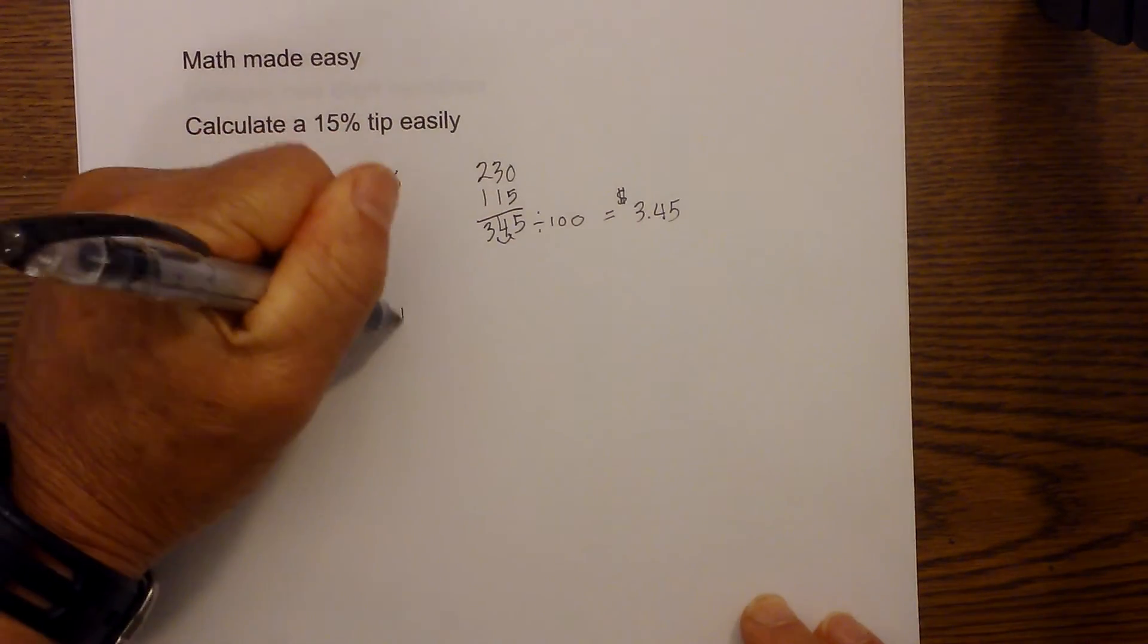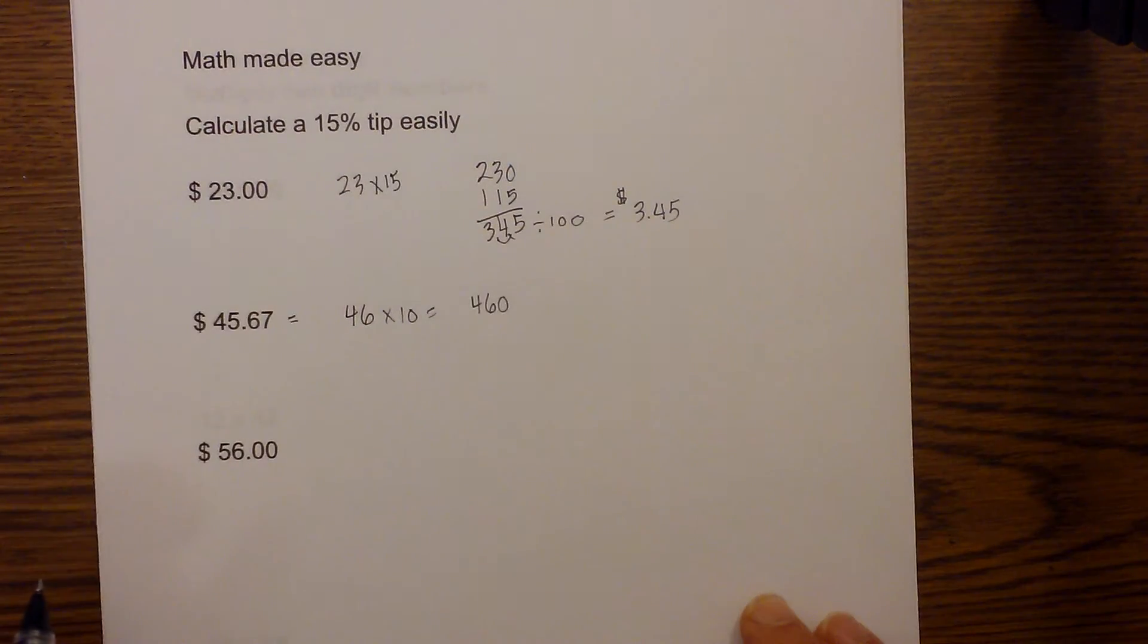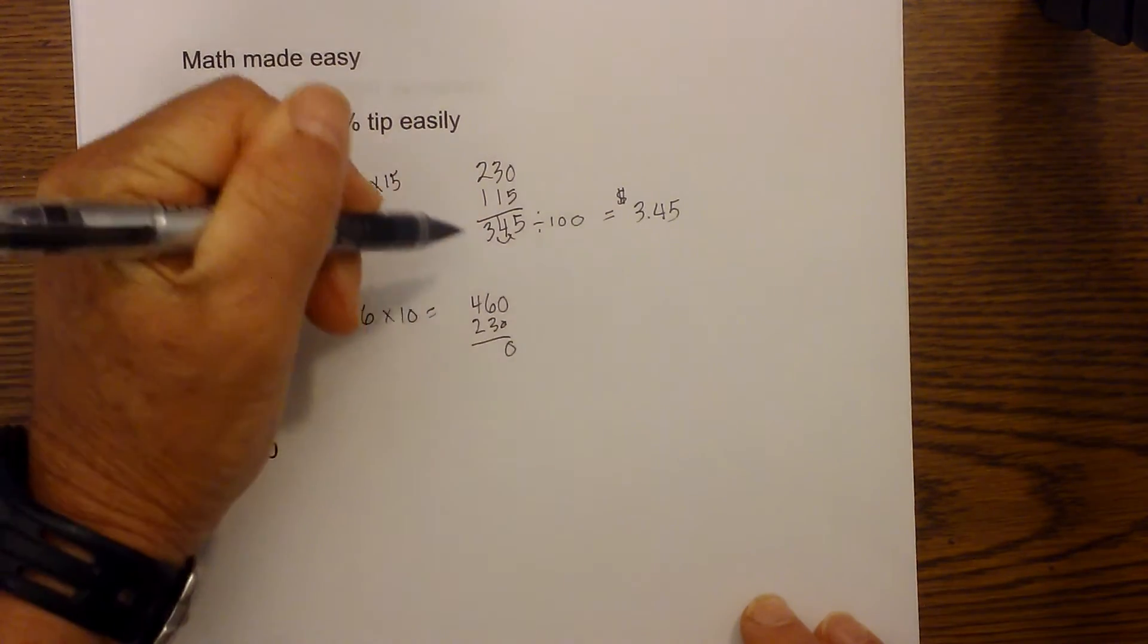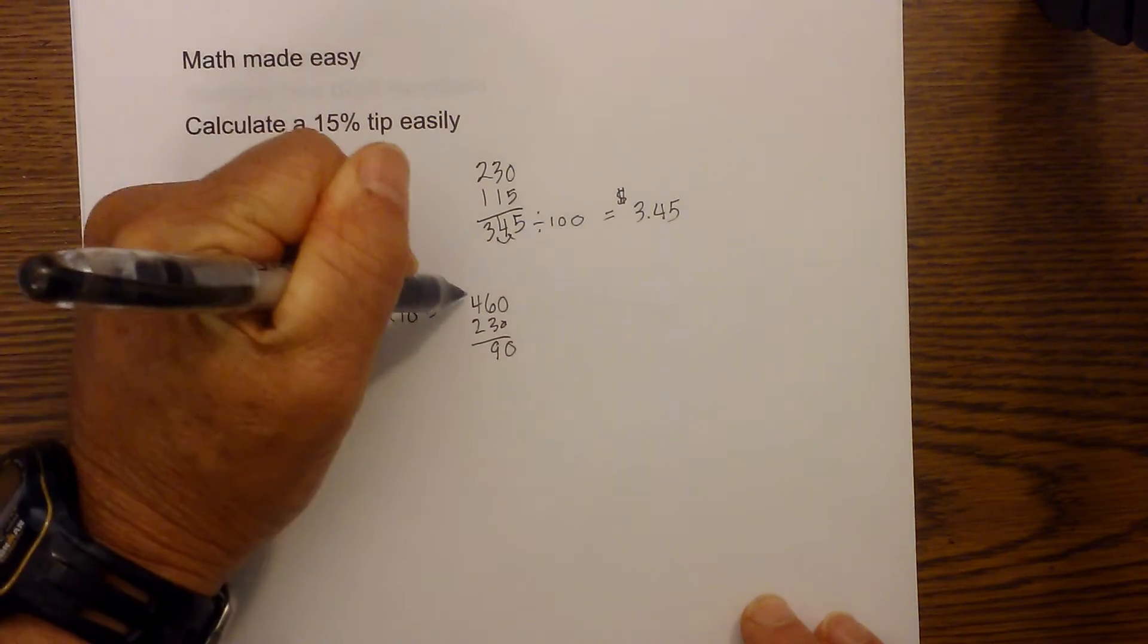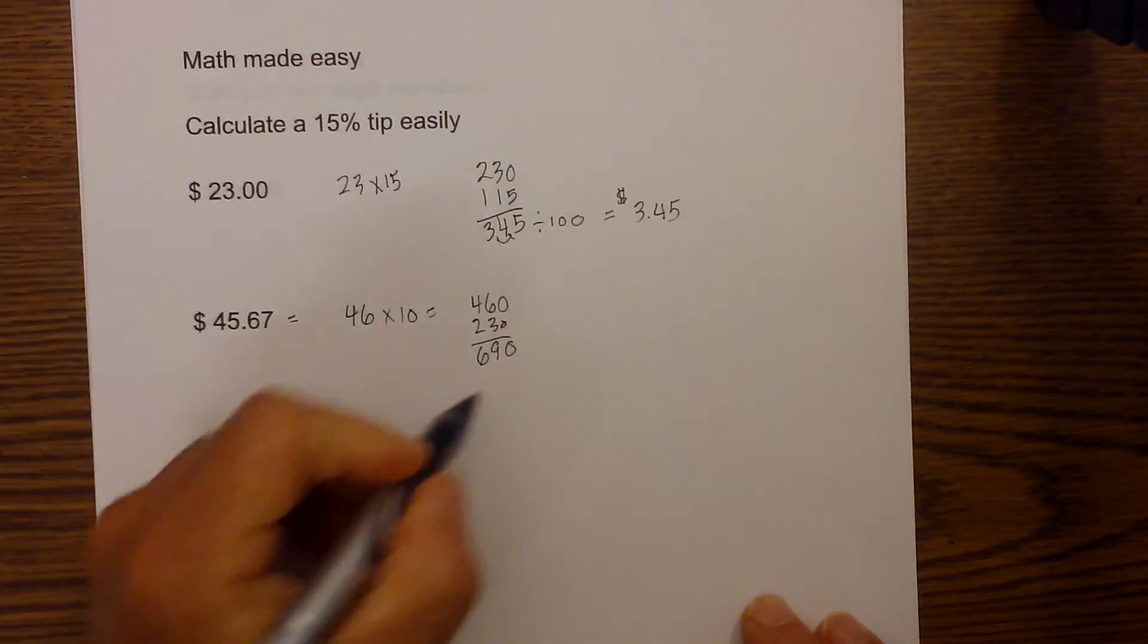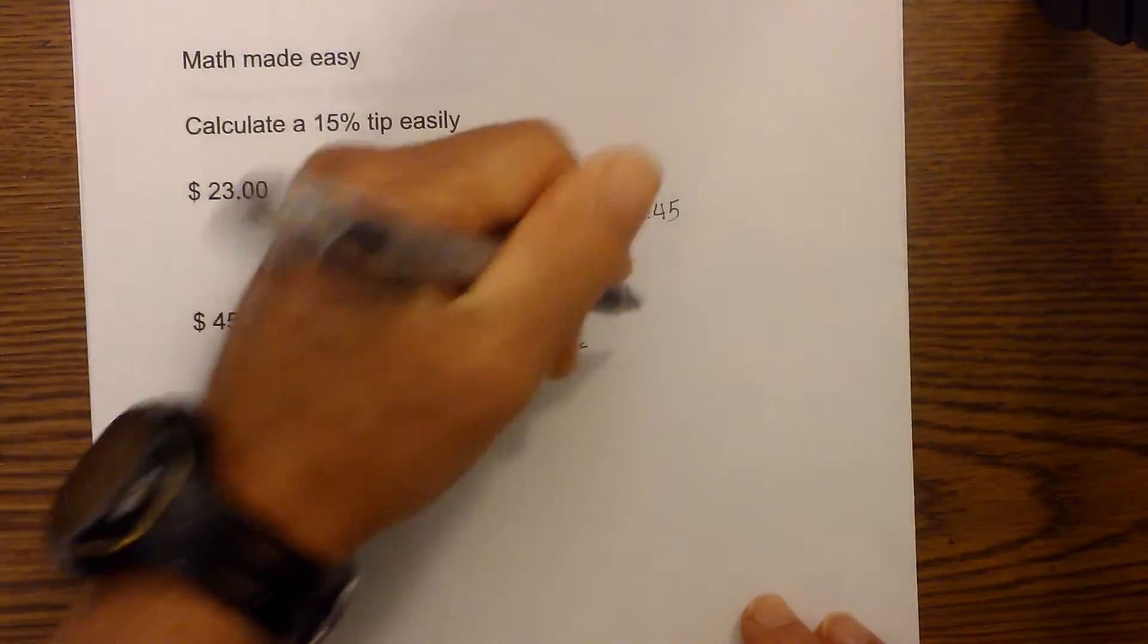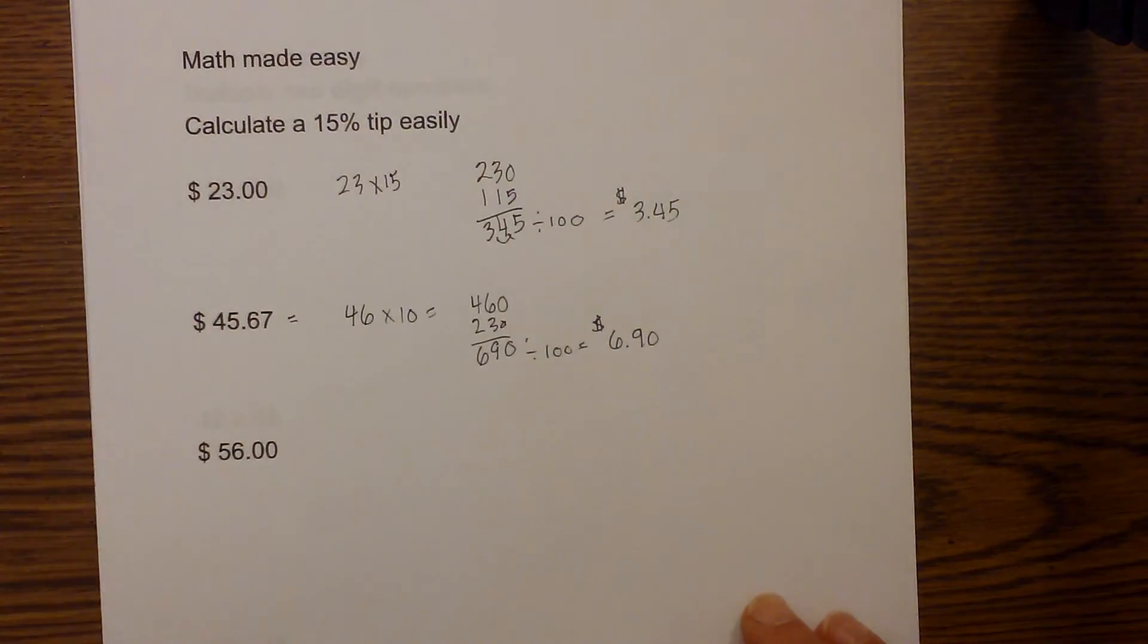And then what you do is take 46 times 10 which is 460, and then what we are going to do is take half of 460 which is 230, and you could basically do this in your head. And then we are going to add: 6 plus 3 is 9 and then 4 plus 2 is 6. So it is 690 divided by 100. So that becomes $6.90 and we will probably round that up to $7.